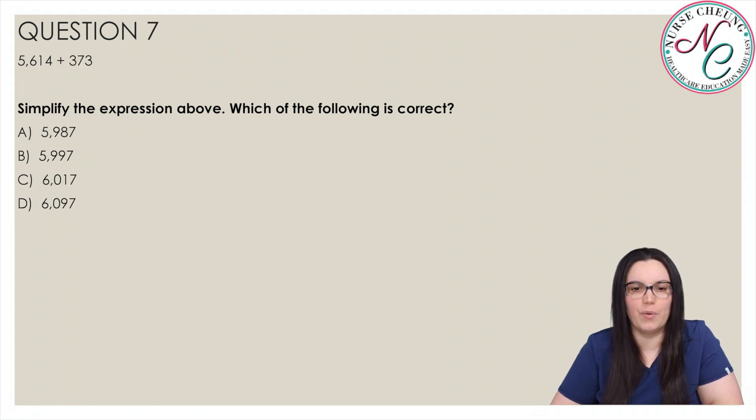5,614 plus 373. Simplify the expression above. Which of the following is correct? Is it A, 3,240, B, 4,777, C, 6,017, or D, 6,097? And the correct answer is A, 5,987.